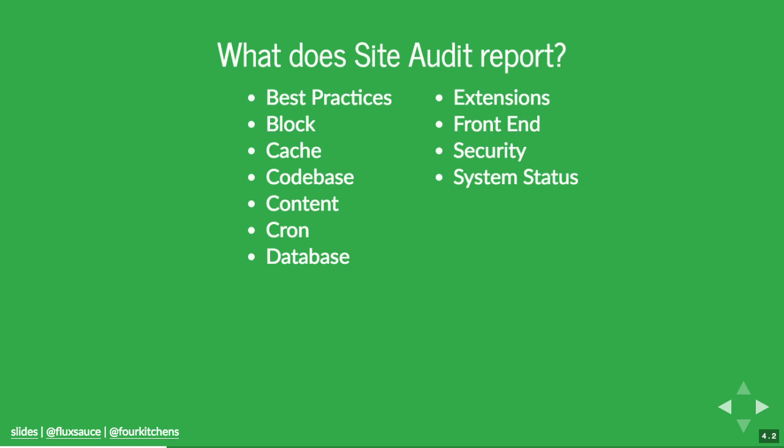Drupal itself is actually really good at telling you what's wrong with it. Some modules are better than others, but Drupal core has a great system status page, and Site Audit surfaces it in a consumable fashion. For users, it provides basic information such as who is user number one, who is number six, how many roles exist on the system, who has elevated permissions, how many blocked users there are, and whether you've blocked user number one — some people recommend that, others don't. It's just a statement of yes, you've done this.